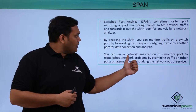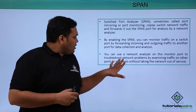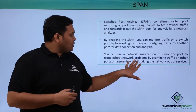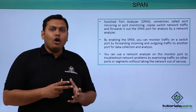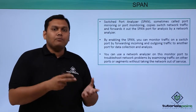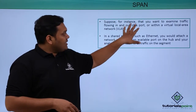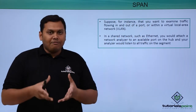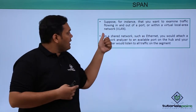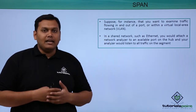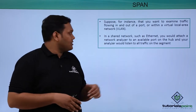You can use a network analyzer on a monitor port, which troubleshoots network problems by examining the traffic and getting information on how the traffic is forwarded upwards and backwards. For example, if you want to examine traffic flowing in and out of a port or within a VLAN, you use SPAN to analyze it using a network analyzer.